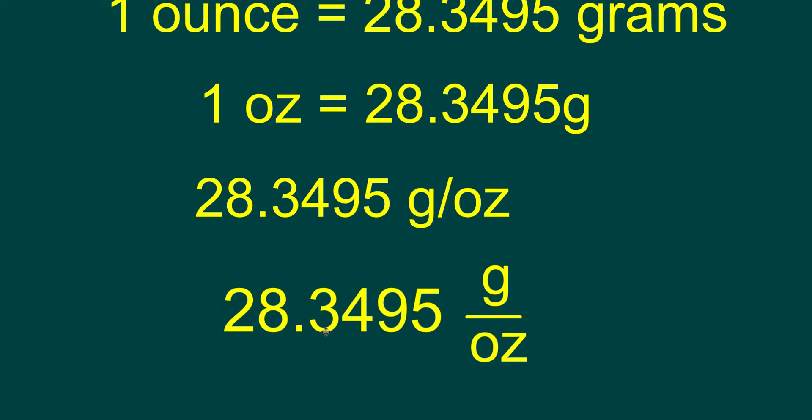So, 28.3495 grams in every ounce, and this is the multiplying factor that we're going to be using for our conversions.